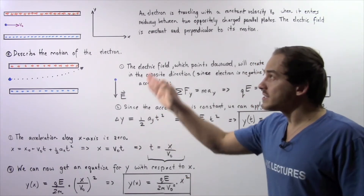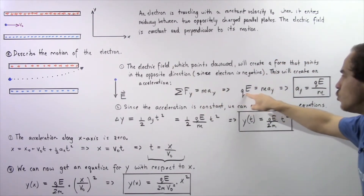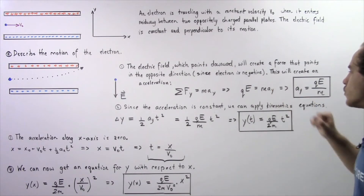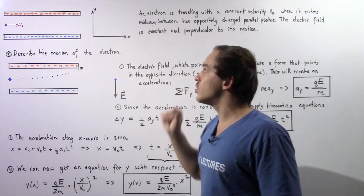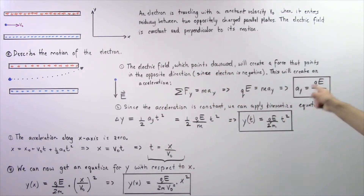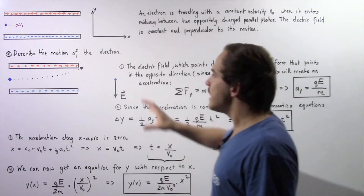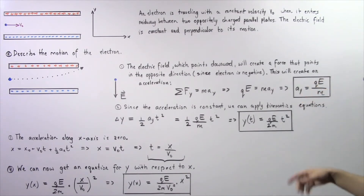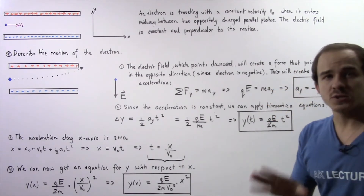We know the force acting on our electron is given by Q multiplied by E, so Q times E equals mass times acceleration. Solving for acceleration, we get that our acceleration along the y-axis is equal to QE divided by M, where Q and M are the charge and mass of our electron, and E is the electric field between the two parallel plates. Since QE and M are all constants, our acceleration will also be constant.